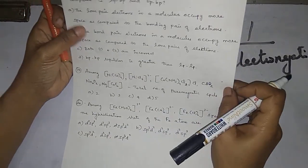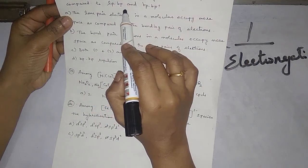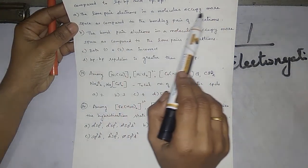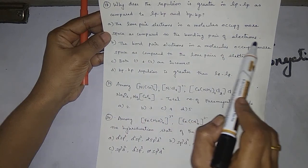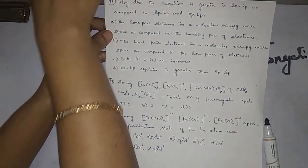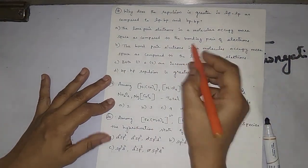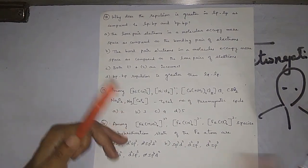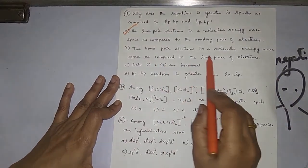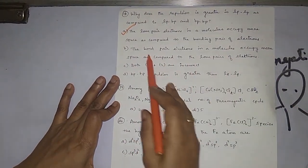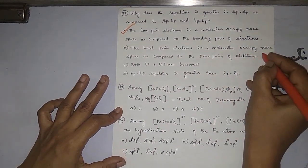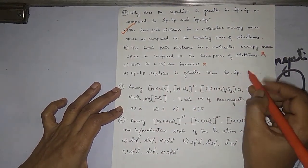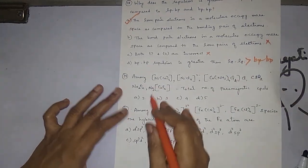Why is repulsion greater in lone pair–lone pair compared to lone pair–bond pair and bond pair–bond pair? The lone pair electrons in a molecule occupy more space compared to the bonding pair of electrons. Bond pair electrons take only one space, but lone pair electrons take much more space, causing greater repulsion. Therefore option A — lone pair > lone pair–bond pair > bond pair–bond pair — is correct.